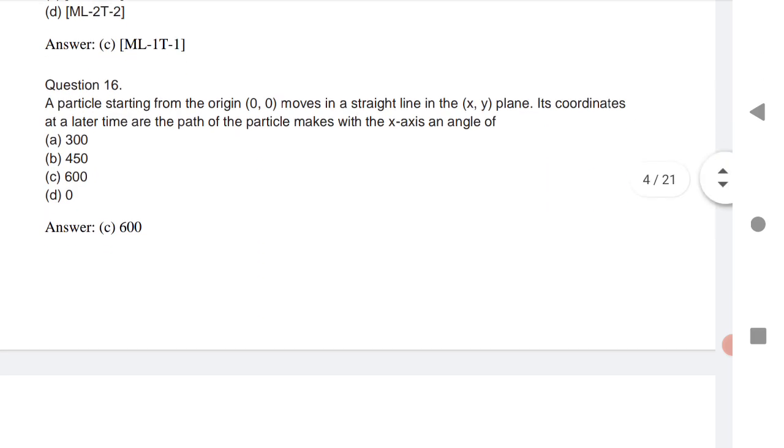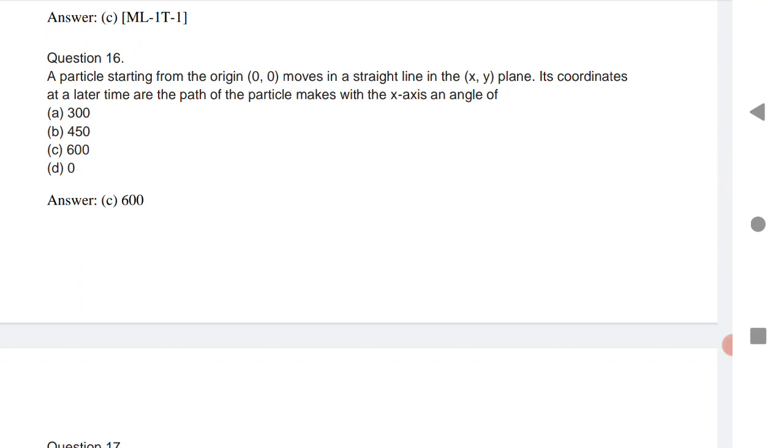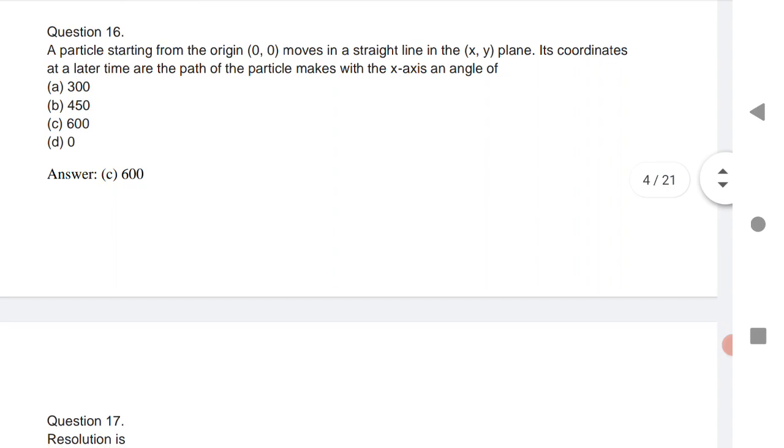Next is very important question. A particle starting from the origin moves in the line x and y plane. Its coordinates at a later time at the path of the particle moves to the x axis at an angle that is 60 degrees.